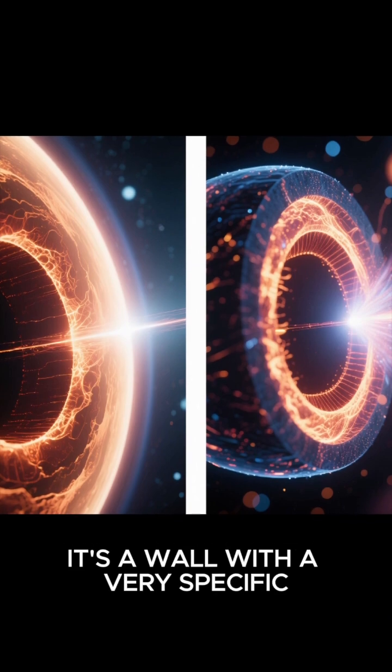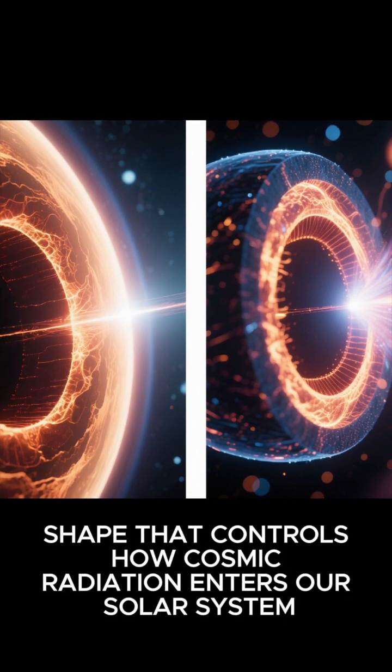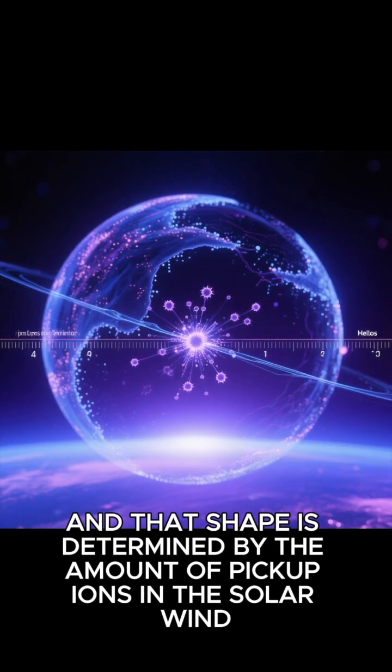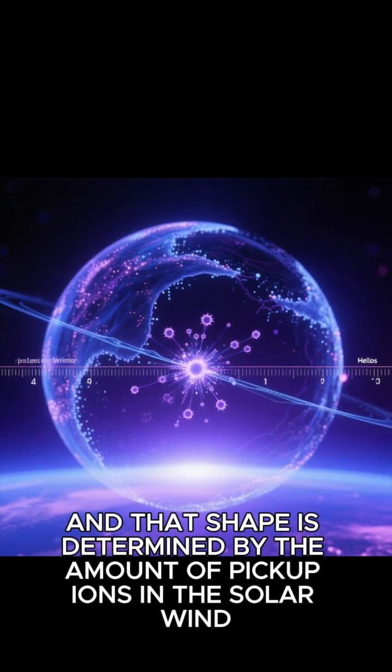But it's not just a wall. It's a wall with a very specific shape that controls how cosmic radiation enters our solar system. And that shape is determined by the amount of pickup ions in the solar wind.